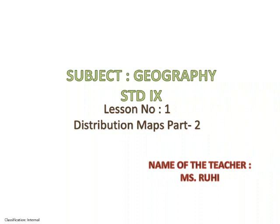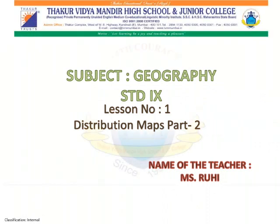In the previous lecture, we studied Distributional Map Part 1, in which we studied the Dot Map. Maps are not objective, but a version of reality. When creating them, lots of choices are made — what to map, how to map, and whether or not to use a map in the first place.